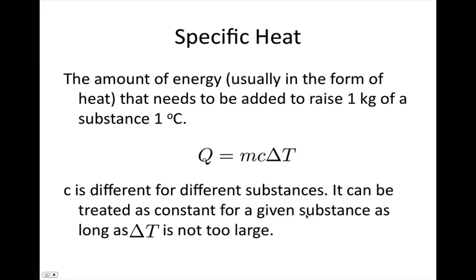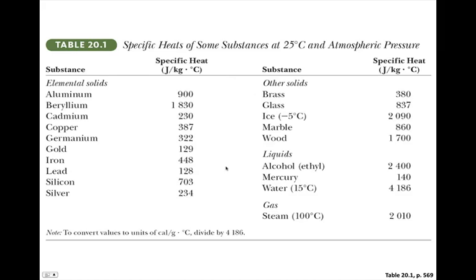Now, specific heats. Specific heat is the energy needed to raise 1 kilogram of a substance by 1 degree C. Q equals mc delta T. C differs for different substances and can be treated as constant for a given substance as long as the temperature change isn't too large. A table of specific heats shows water is the largest at 4,186, metals range from around 900 for aluminium down to 129 for gold, and ice and steam have different values from liquid water.